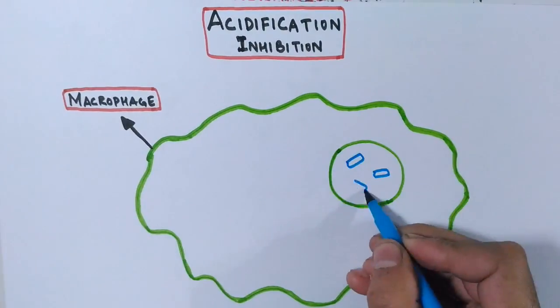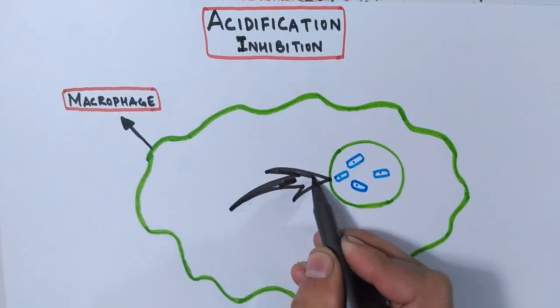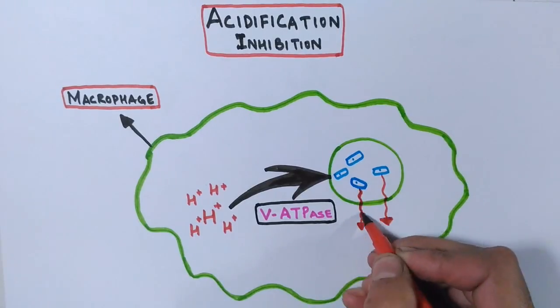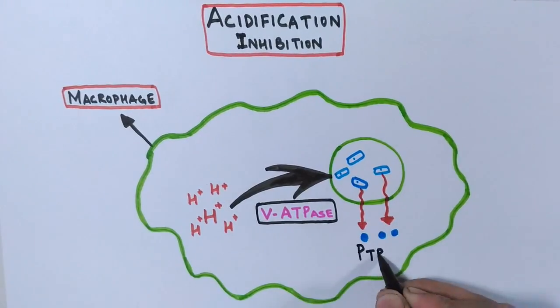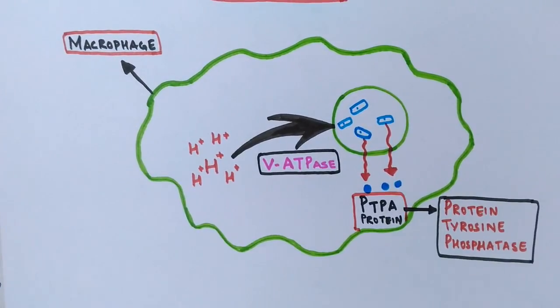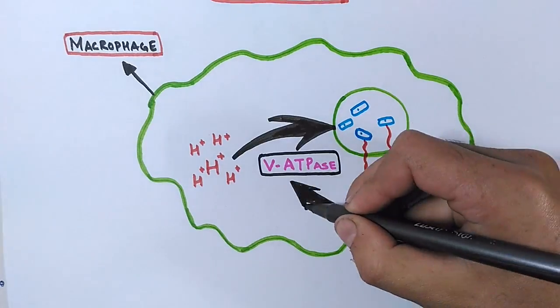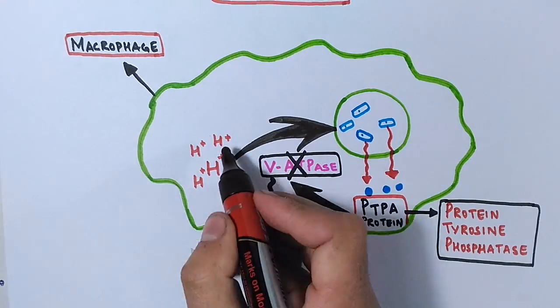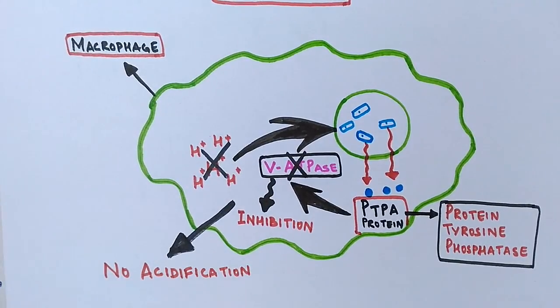The acidification inhibition is the important aspect for the survival of mycobacterium inside the phagosome. Under normal conditions the V-ATPase pump pumps the protons into phagosome to increase the acidity of phagosome which marks the maturation of phagosome. But the mycobacterium releases a protein called PtpA protein, that's protein tyrosine phosphatase, and it's this PtpA protein that binds to subunit H of V-ATPase which inhibits the activity of V-ATPase, thus ultimately inhibits the process of phagosome acidification.